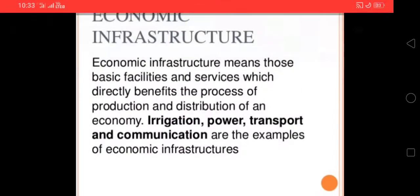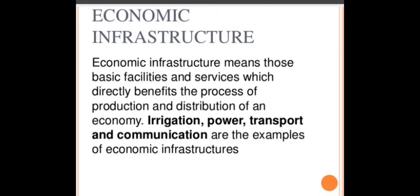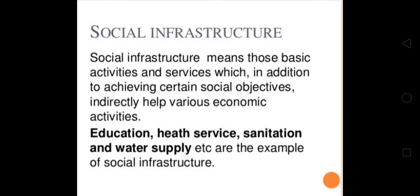Economic infrastructure means those basic facilities and services which directly benefit the process of production and distribution of an economy. Irrigation, power, transport, and communication are examples of economic infrastructure. Social infrastructure means those basic activities and services which, in addition to achieving certain social objectives, indirectly help various economic activities. Education, health services, sanitation, and water supply are examples of social infrastructure.